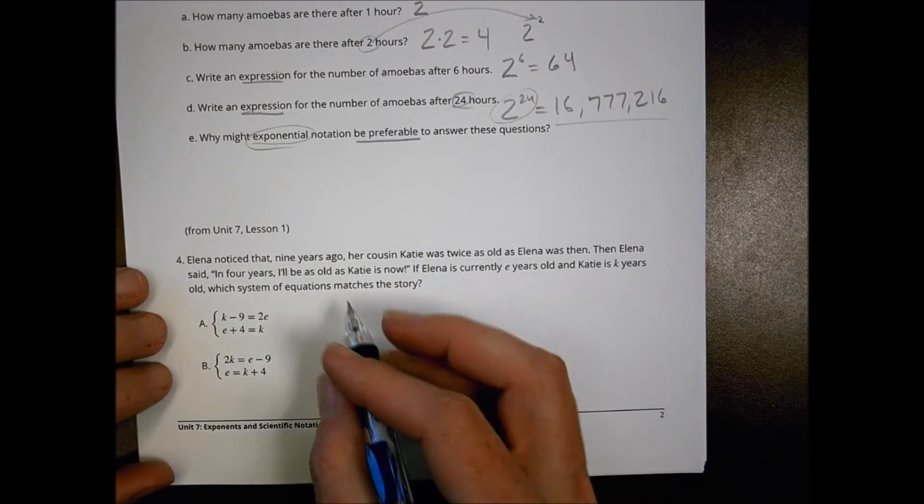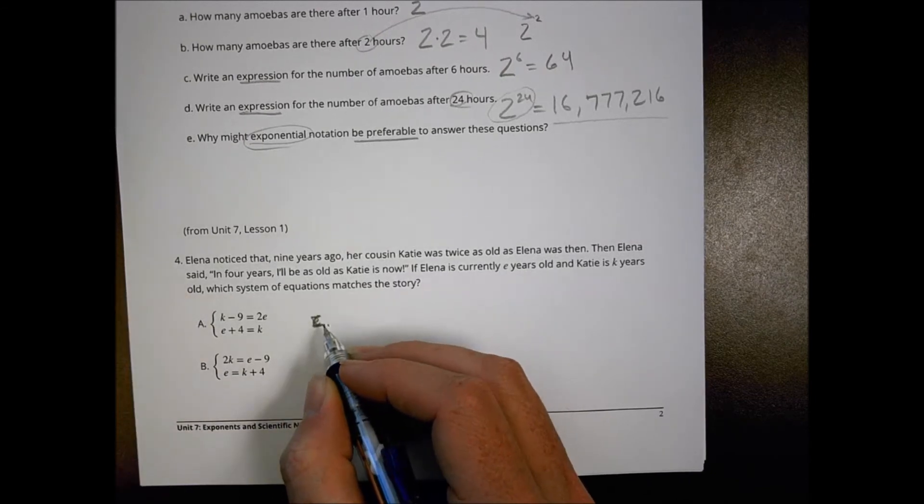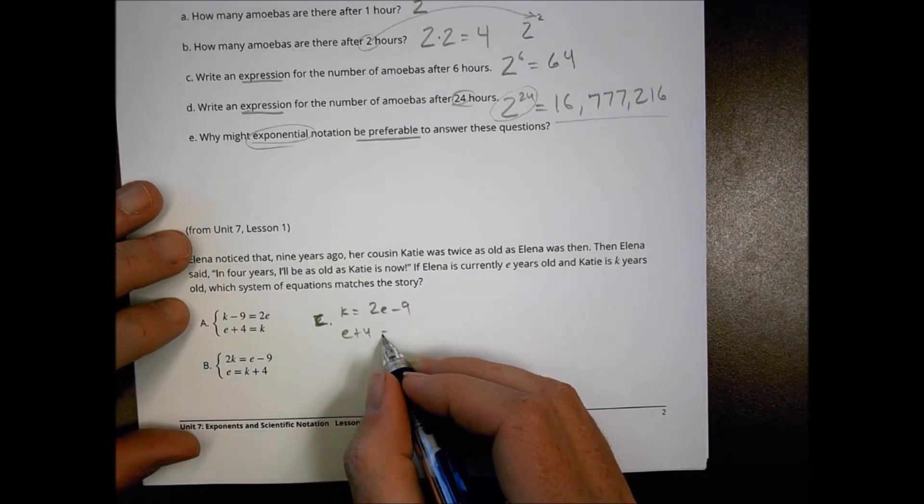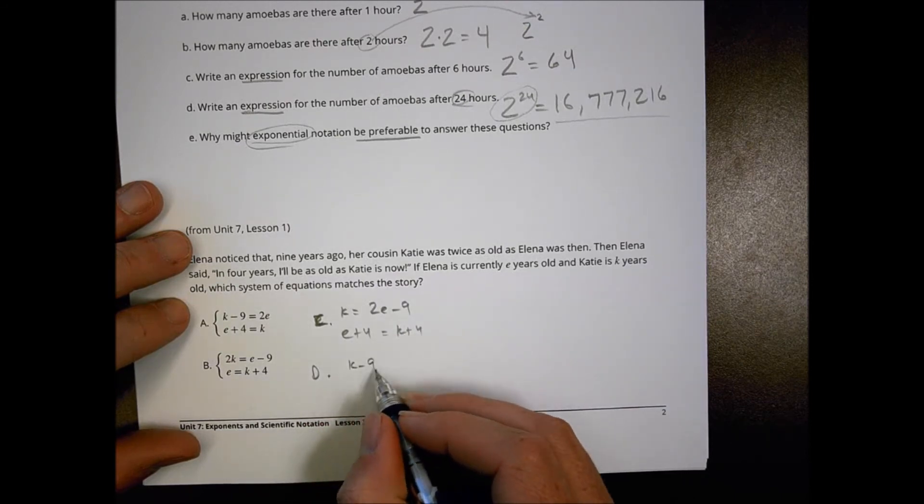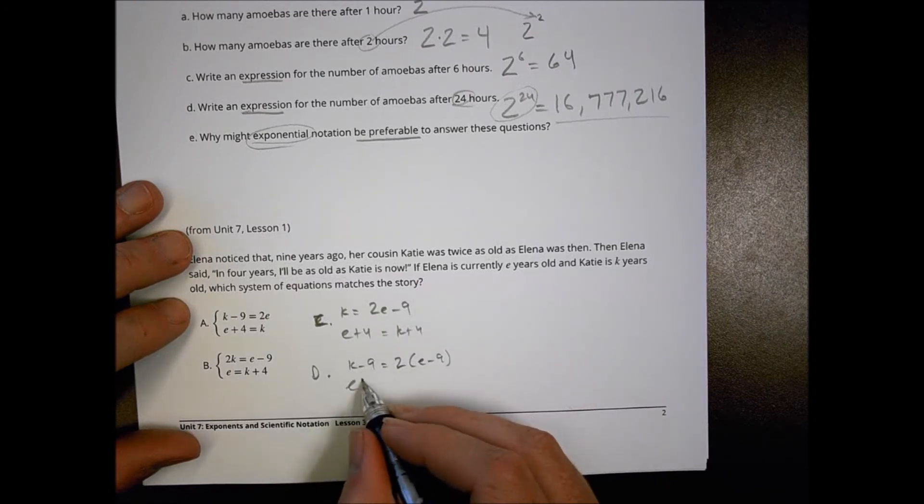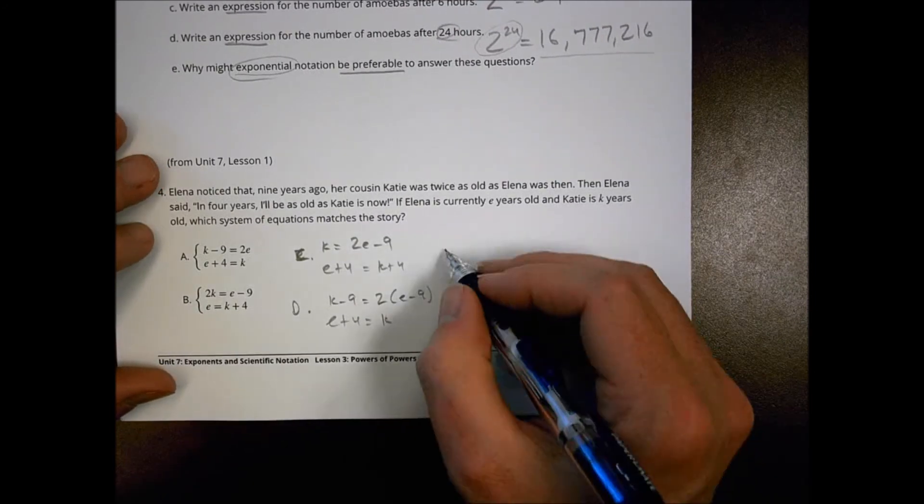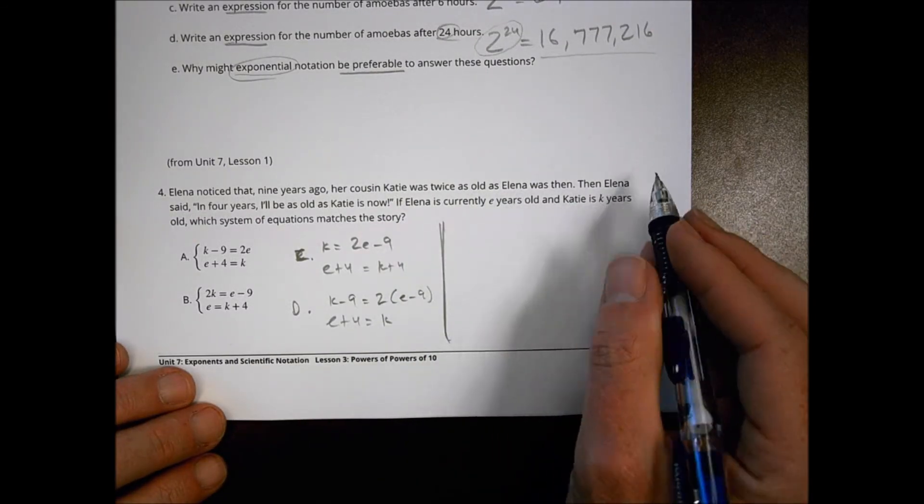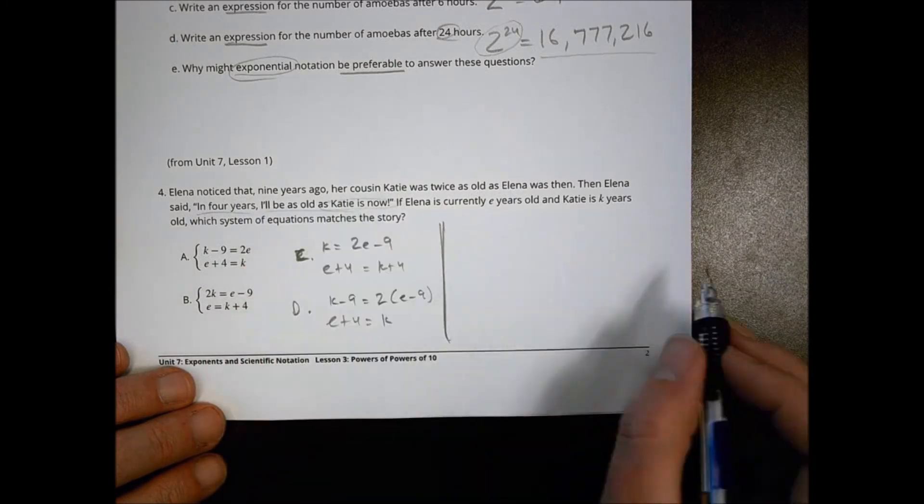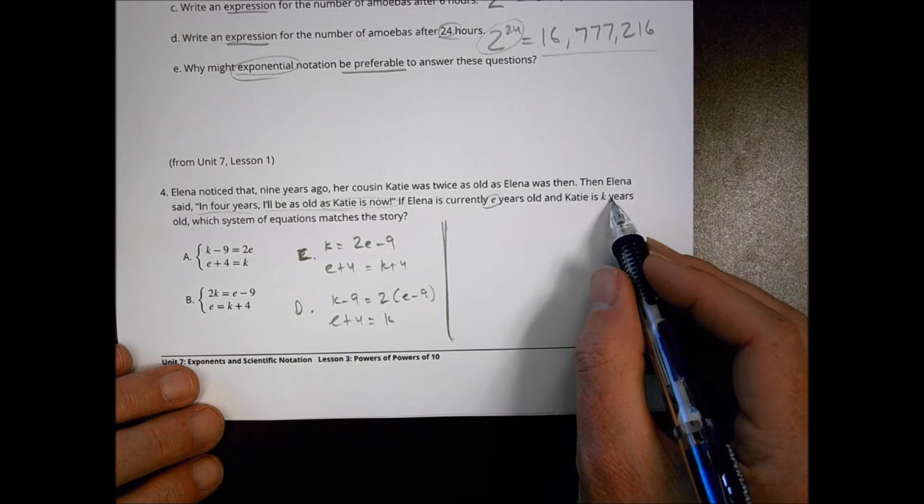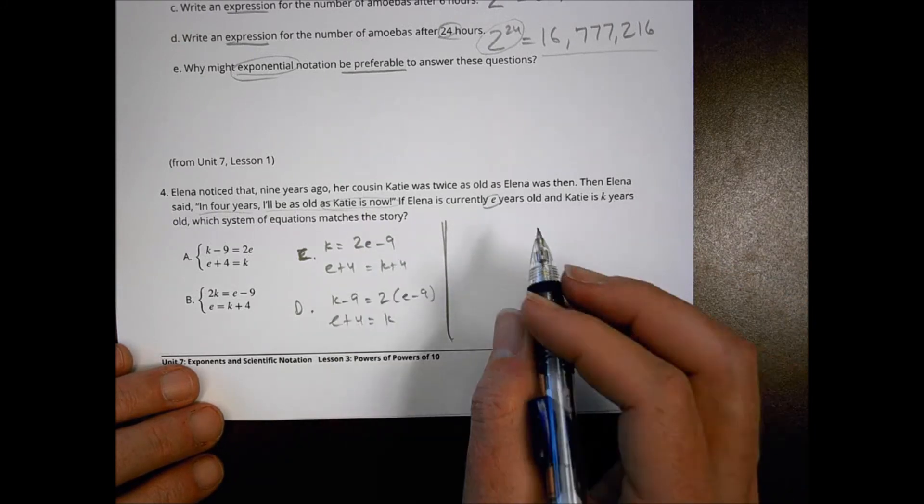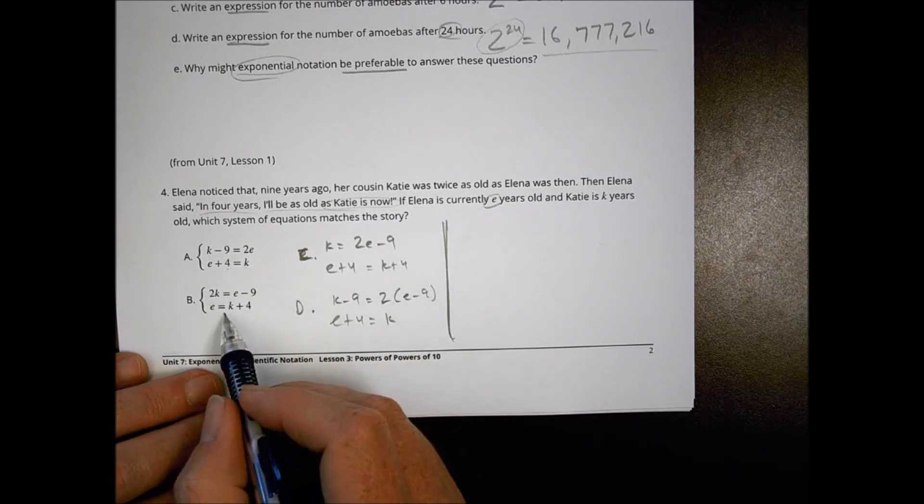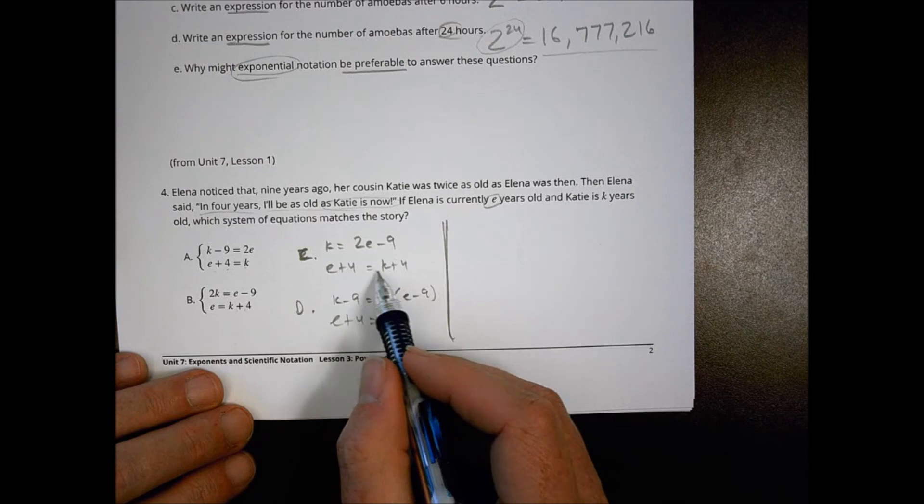Our next one here. On the back side, there's choice C, which is K equals 2E minus 9, E plus 4 equals K plus 4. And choice D is K minus 9 equals 2 times E minus 9, and E plus 4 equals K. Let's take a look at what I'm dealing with. Elena noticed that nine years ago, her cousin Kate was twice as old as Elena was then. Then Elena said, in 4 years, I'll be as old as Kate is now. If Elena is currently E years old and Kate is K years old, which system of equations matches the story? Let's look at a couple things. For the last part of the equation, in 4 years, I'll be as old as Katie is now. That's probably what you might want to start off with as being the easier part. Elena is saying that in 4 years, her age plus 4 more years is going to equal Katie's age.